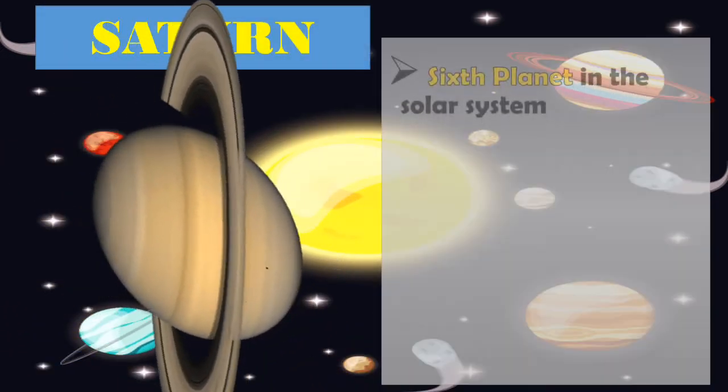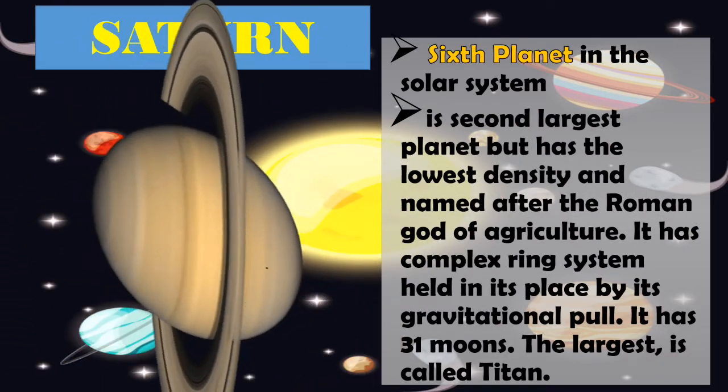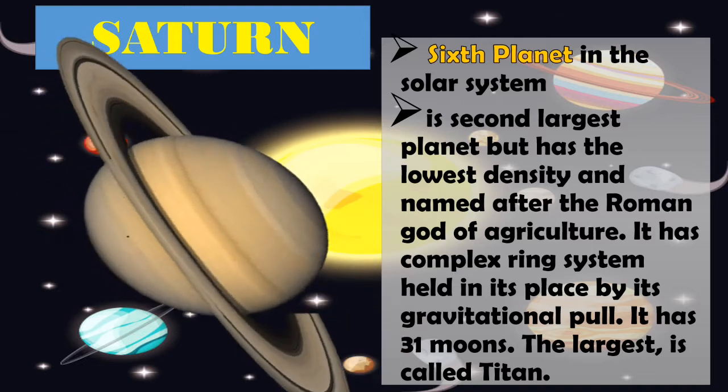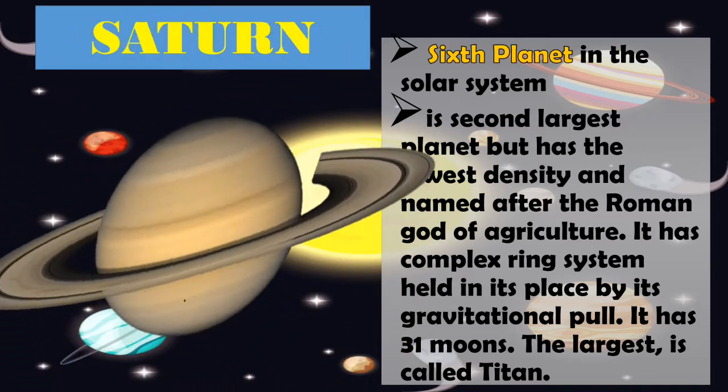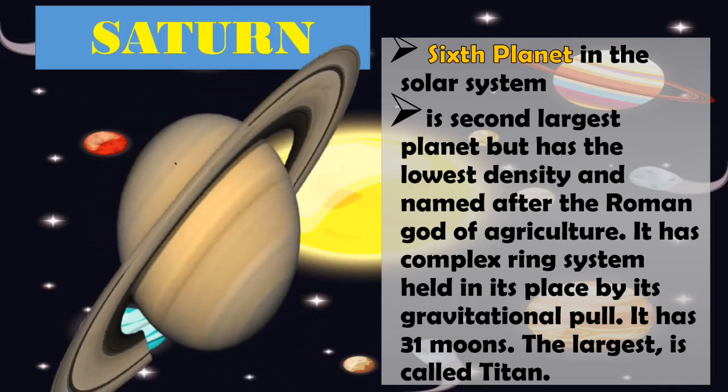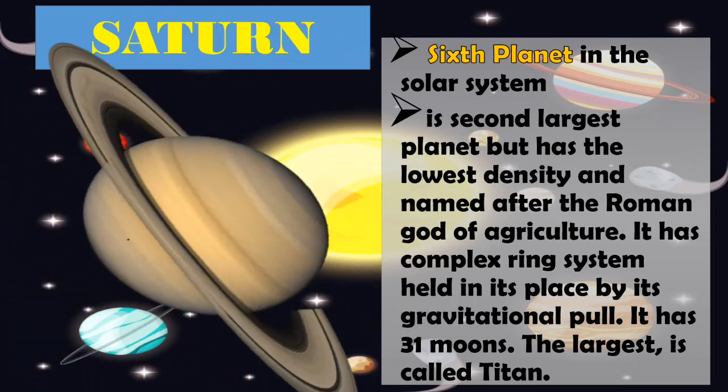Saturn, sixth planet in the solar system, is second largest planet but has the lowest density and is named after the Roman god of agriculture. It has complex ring system held in its place by its gravitational pull. It has 31 moons. The largest is called Titan.